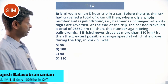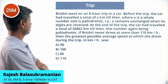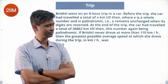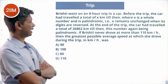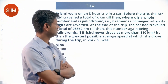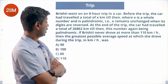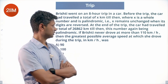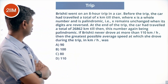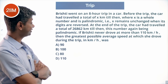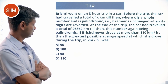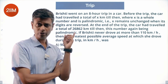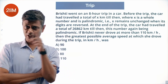Brishti went on an 8-hour trip in a car. Before the trip, the car had traveled a total of X kilometers. X is a whole number and it's palindromic — it remains unchanged when its digits are reversed. At the end of the trip, the car had traveled 26862 kilometers, which is also palindromic: 26862 reversed is still 26862.